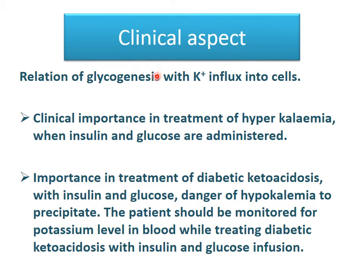Clinically, glycogenesis is related to potassium influx into cells. Its importance is in the treatment of hyperkalemia when insulin and glucose are administered — this drives potassium into cells alongside glycogen synthesis. In treatment of diabetic ketoacidosis with insulin and glucose, there is a danger of hypokalemia, so the patient should be monitored for blood potassium levels.